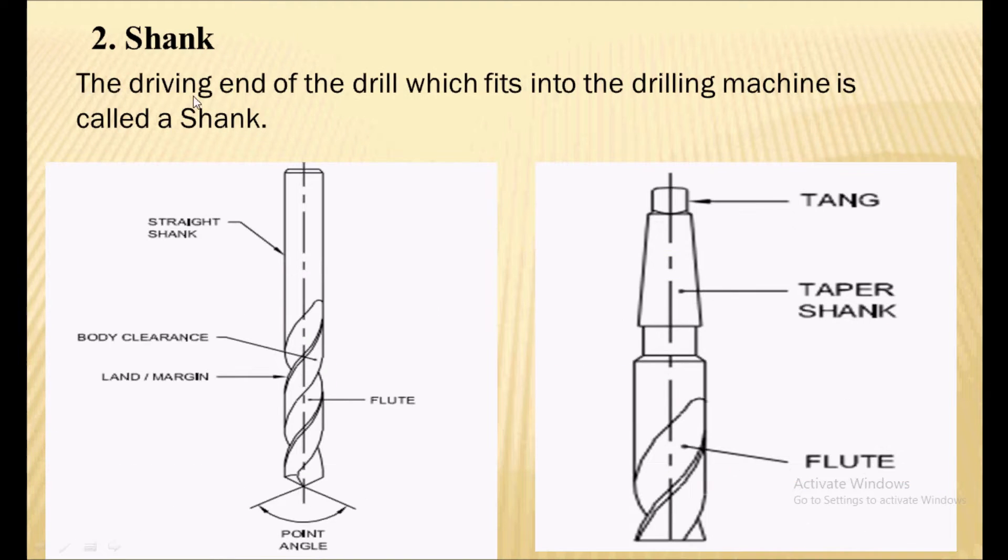Next part is the shank. The shank is the driving end of the drill which fits into the drilling machine. Shanks are of two types: straight shank and taper shank. For small diameter drills we can see a straight shank, and for large diameter drills we can see the taper shank.